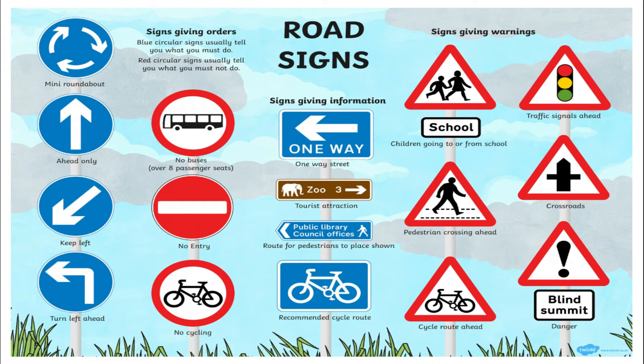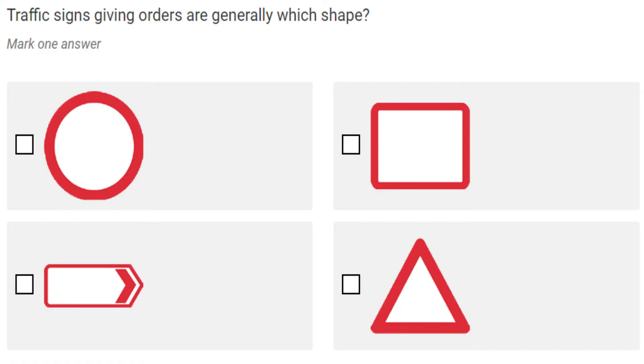There's a crossroads sign meaning a junction is approaching with two roads joining from the left and right — you have to be wary of crossing cars. The last one is the blind summit, which means you may expect danger ahead coming towards you. That's it for this picture. Let's move on to the next part of the video.